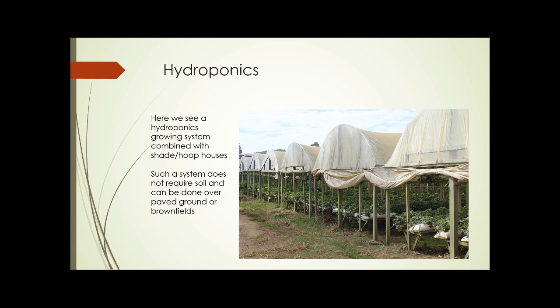Here on this slide, we see a hydroponics growing system combined with a combination of hoop and shade houses. Such a system doesn't require soil and can be done over paved ground or brownfields that have not been remediated. In addition, it would be possible to wrap these houses in plastic, supply a source of heat, and grow year-round.